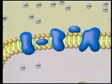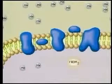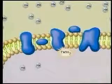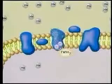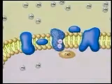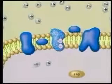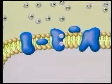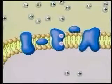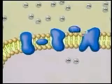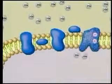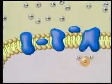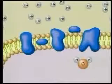A similar sequence of events takes place with FADH2. FADH2 transfers electrons to the second ion pump in the chain and is converted to FAD. Hydrogen ions are pumped through the protein into the outer compartment. The electrons shift down to the last protein in the chain, more hydrogen ions are pumped, and again oxygen serves as the final electron acceptor and a water molecule is formed.